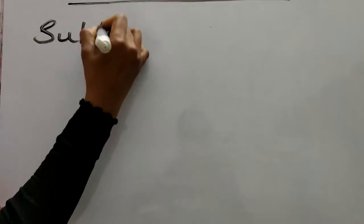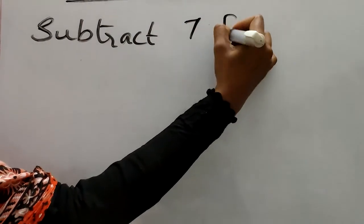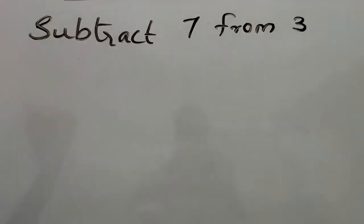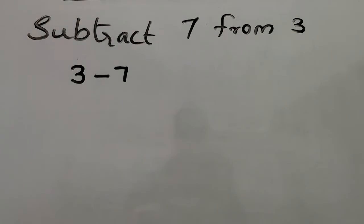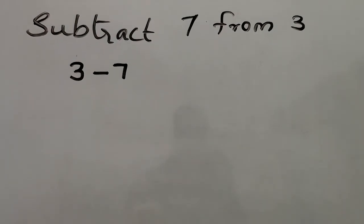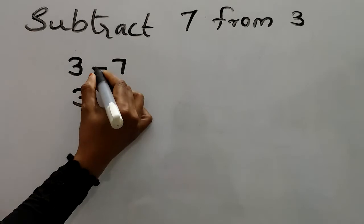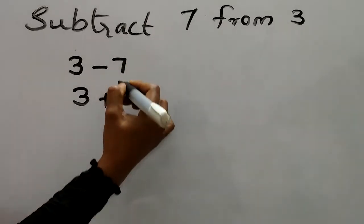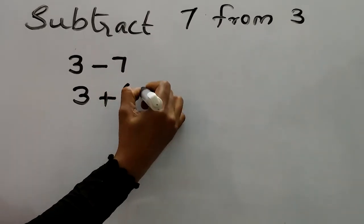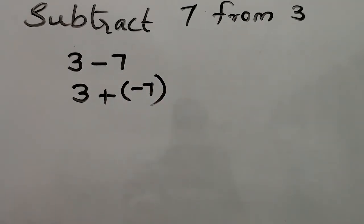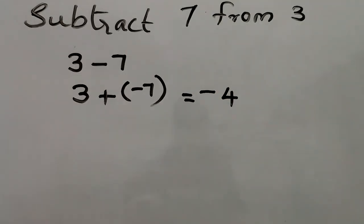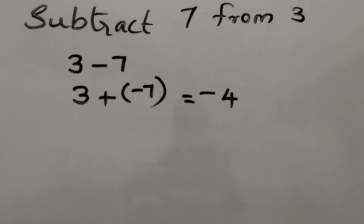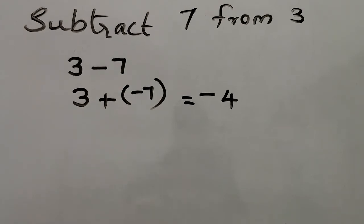Now let's subtract 7 from 3, which means 3 minus 7. The first number is 3. Changing subtraction to addition: the additive inverse of 7 is negative 7. So 3 plus negative 7 equals negative 4.